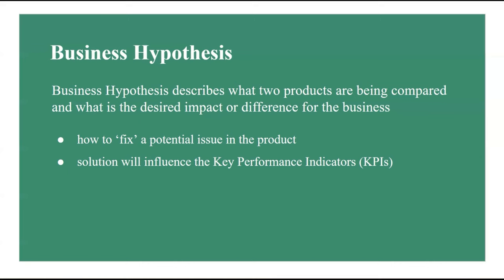The next step is to compute p̂_pooled — the estimate of the pooled success probability. This equals the sum of clicks for both control and experimental groups divided by the total number of observations in both groups: p̂_pooled = (x_control + x_experimental) / (n_control + n_experimental). Then we compute the pooled variance: SE²_pooled = p̂_pooled × (1 − p̂_pooled) × (1/n_control + 1/n_experimental).